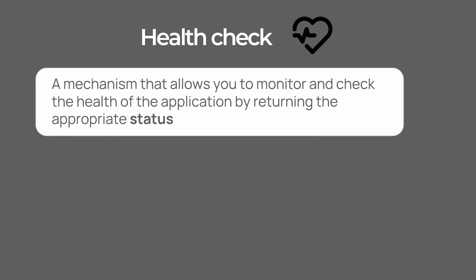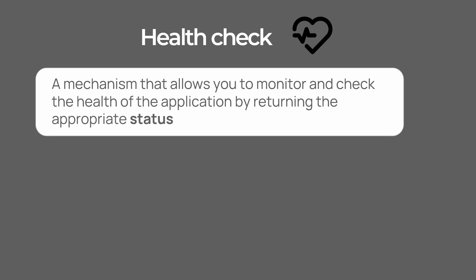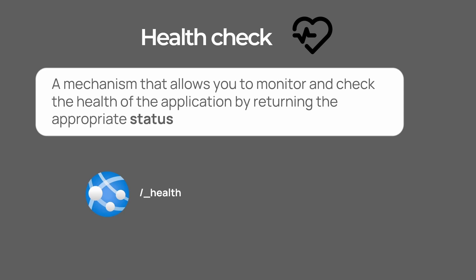Before we jump into the code, let's talk about what a health check is in general. A health check is nothing but a mechanism that allows you to monitor and check the health of the application by returning the appropriate status. So let's say that our web API application has a health check enabled and it is available at the underscore health endpoint. And if you wanted to ping that endpoint with a GET request, you'll get the response — for example, 200 OK.